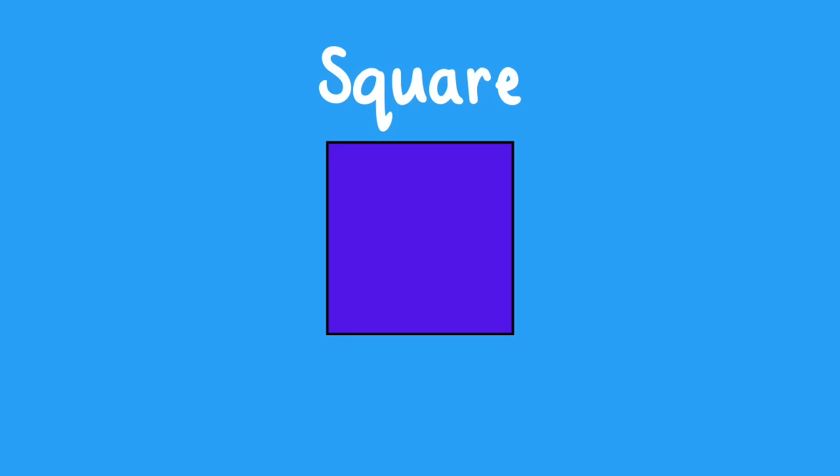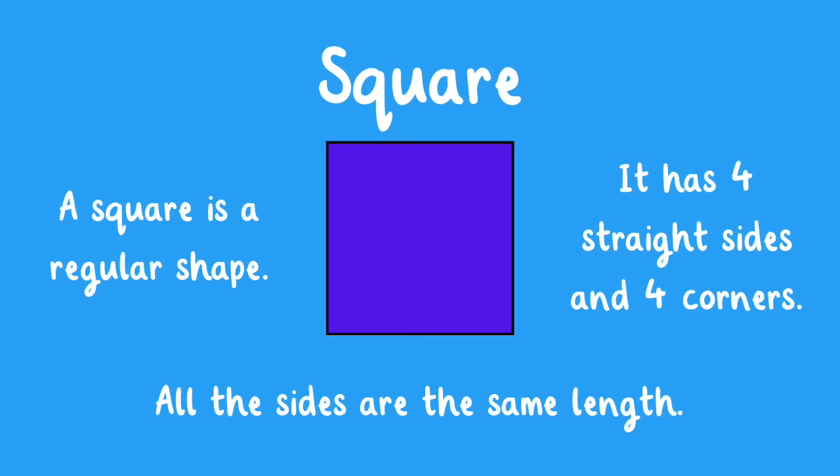A square is a regular shape. It has four straight sides and four corners.